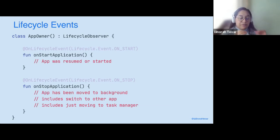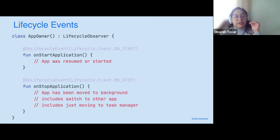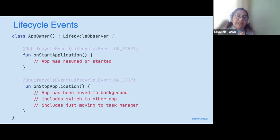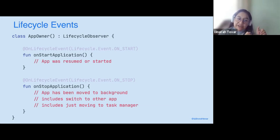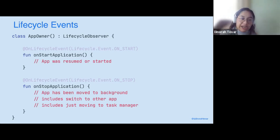For tracking the foreground of your application, you need to track the background too. So you might want to do another function called onStopApplication. This function needs to be executed when the application moves to background — maybe switching one app from another, maybe moving to the task manager, answering a call. Everything that goes outside our application is going to be tracked in this place.